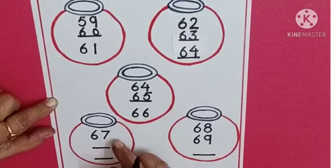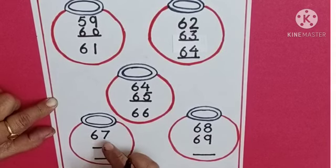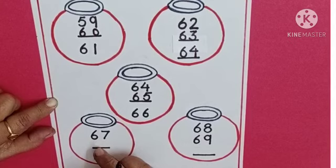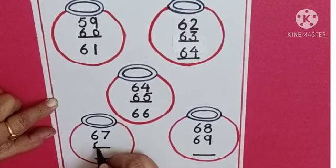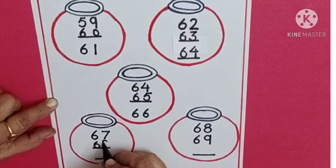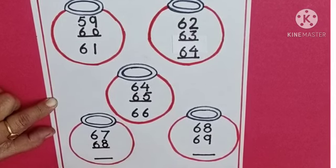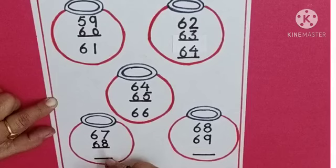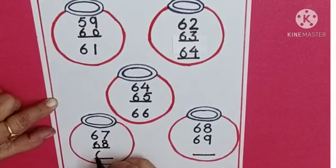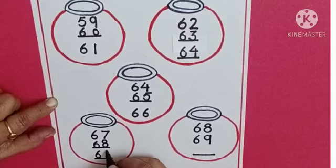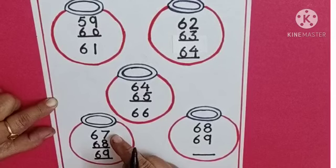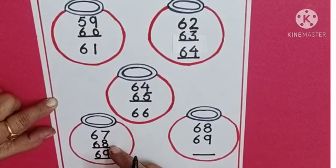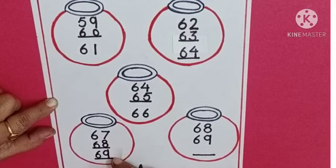This is number 6, 7, 67. Which number is missing here? After 67, 6, 8, 68. And after 68, which number is missing? 6, 9, 69. 67, 68 and 69.